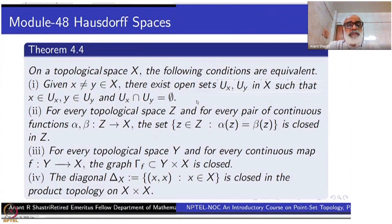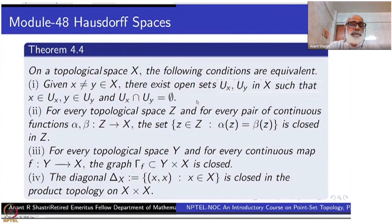The second condition is: for every topological space Z and for every pair of continuous functions alpha, beta from Z to X, the set of points z in Z such that alpha(z) equals beta(z) is a closed subset of Z.